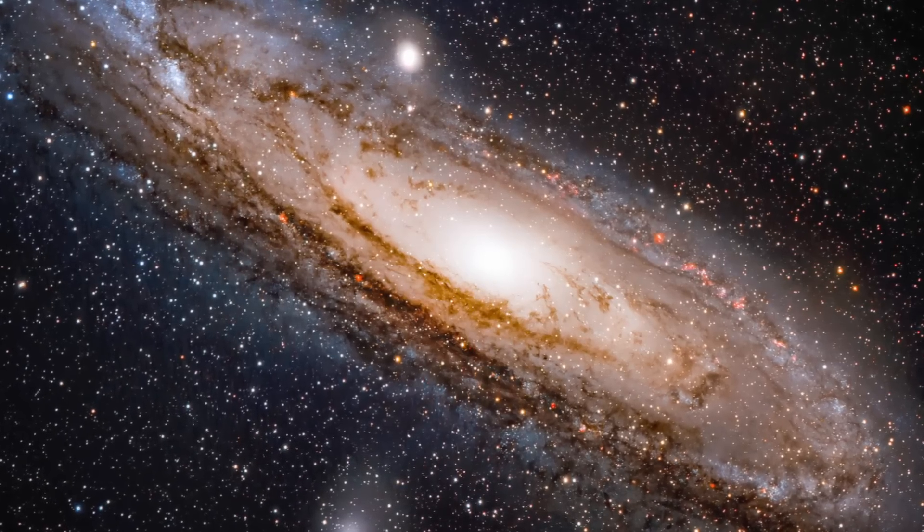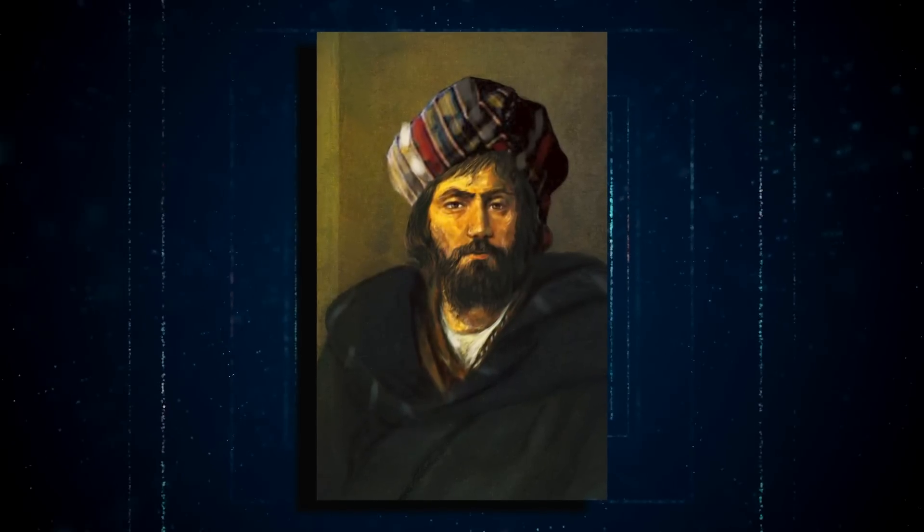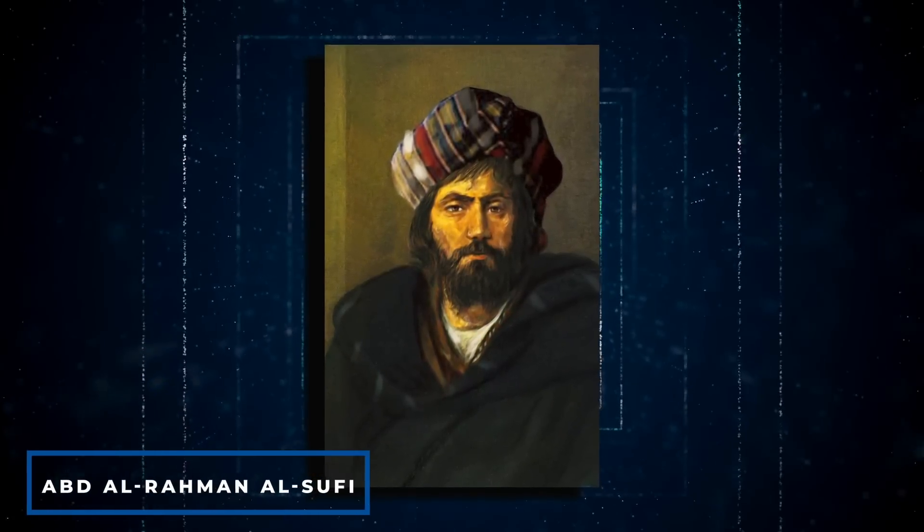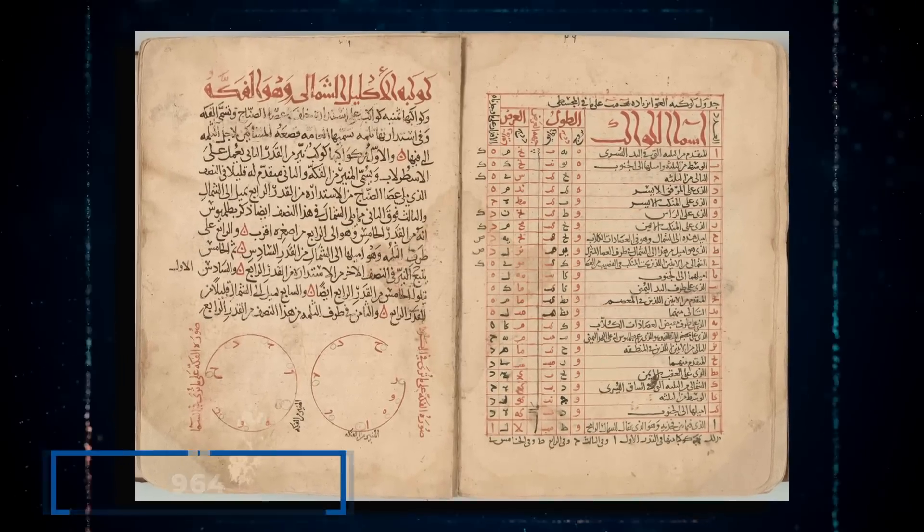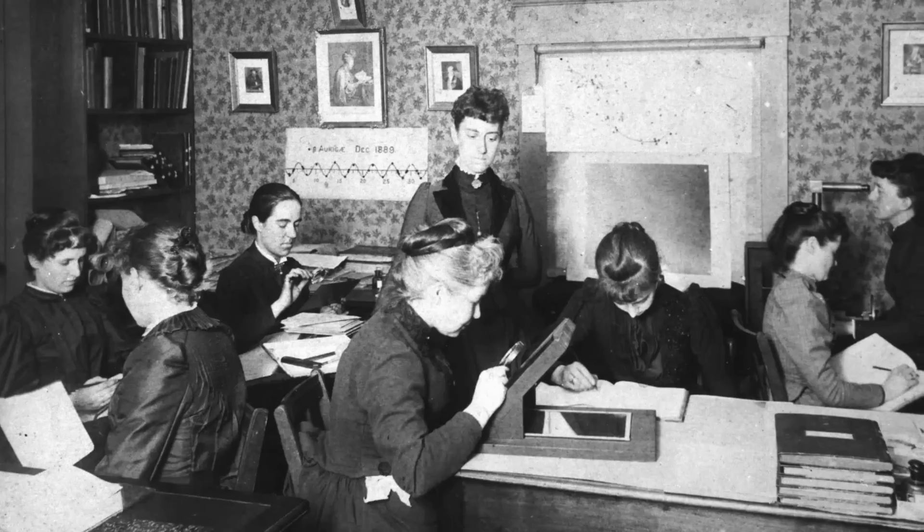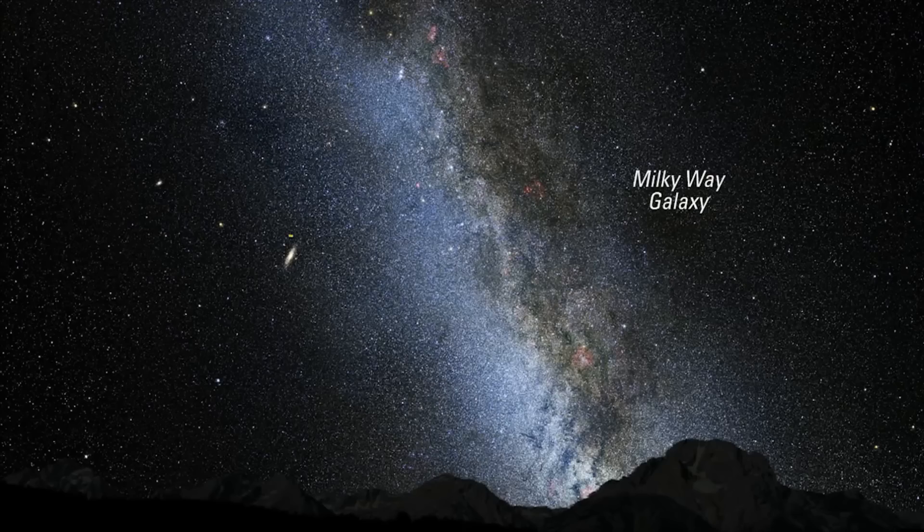Andromeda has been known to humans for centuries. The first known report of our nearest neighbor was by the Persian astronomer Abd al-Rahman al-Sufi, who described it as a small cloud in 964 in his book of fixed stars. But it wasn't until the 1920s that astronomers began debating whether it was a separate galaxy or part of the Milky Way.